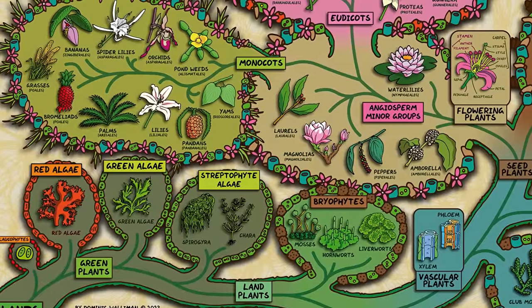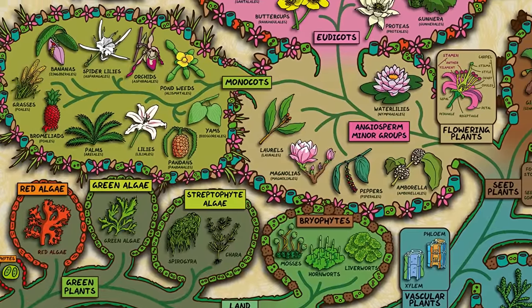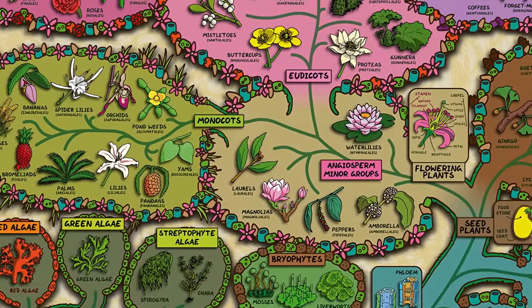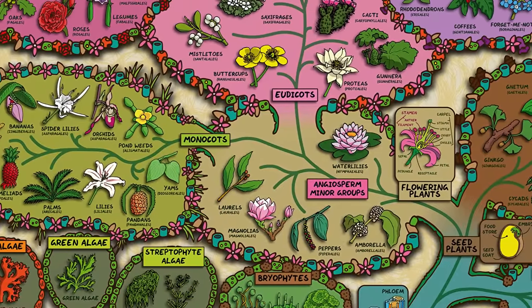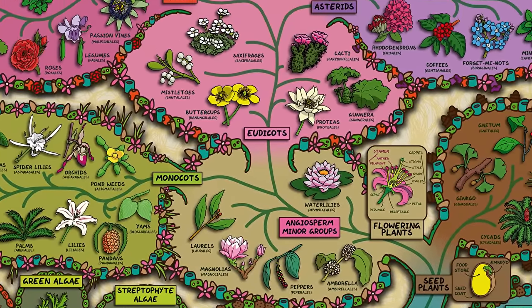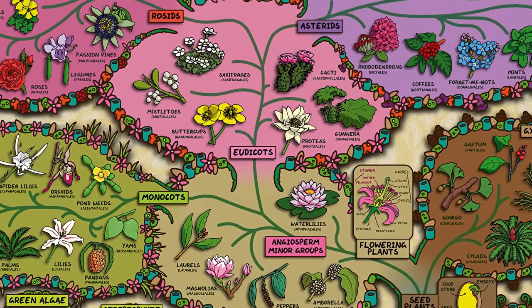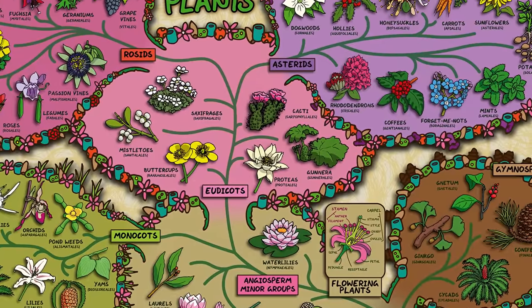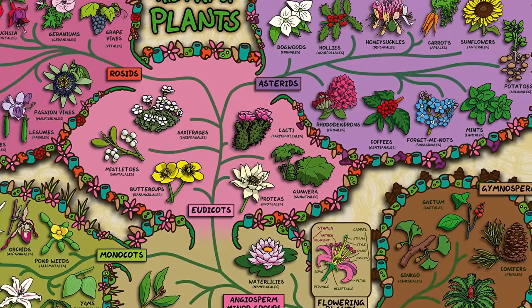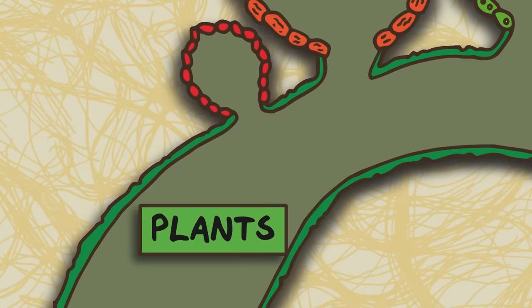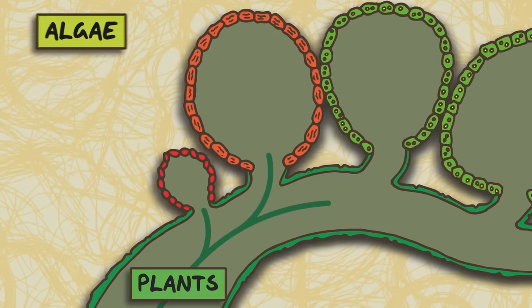In this map I found the most sensible way of organising all the plants was by how they've evolved. So this map is really an evolutionary tree of all plant life based on our current understanding. Let's start at the beginning with the most ancient plants: algae.